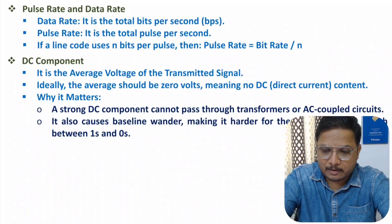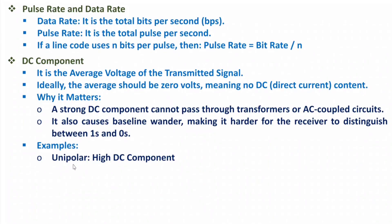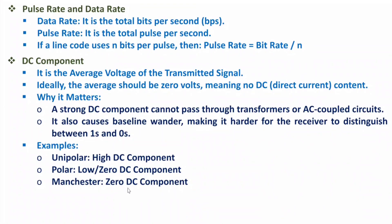So DC component should ideally be zero. For unipolar signaling, there is a high DC component because logic 1 transmits plus V and logic 0 transmits zero voltage — more ones mean a higher DC level. Polar signaling can have low or near-zero DC component. Manchester coding has zero DC component, making it better quality in terms of DC component.